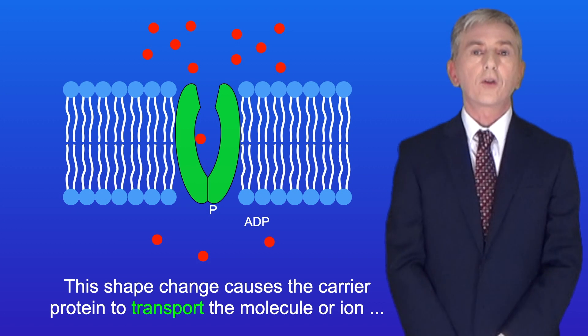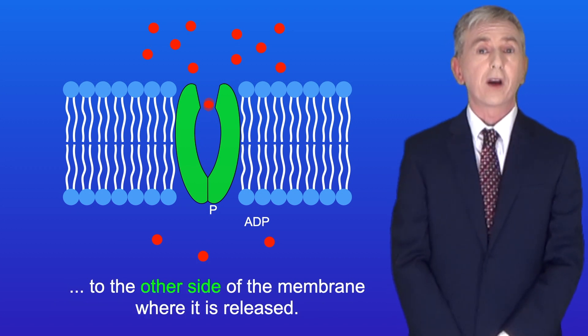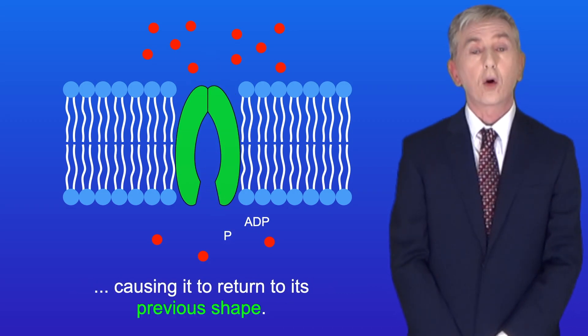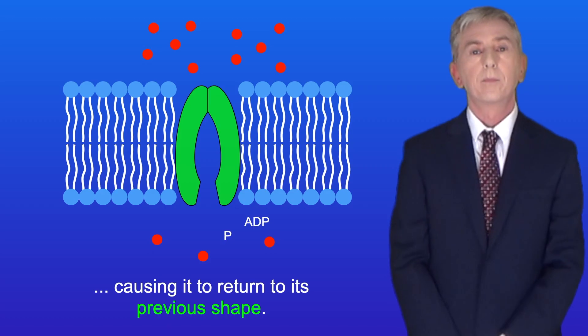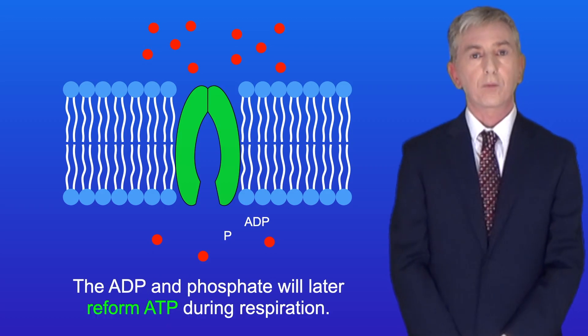This shape change causes the carrier protein to transport the molecule or ion to the other side of the membrane where it's released. The phosphate now leaves the carrier protein causing it to return to its previous shape. The ADP and phosphate will later reform ATP during respiration.